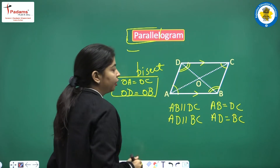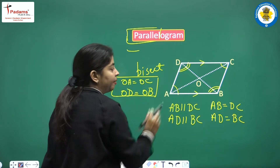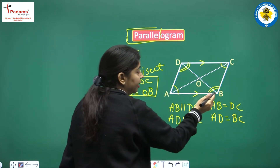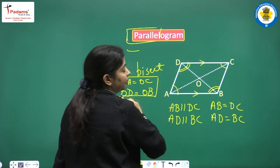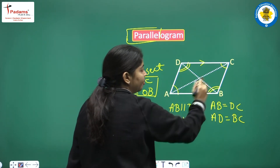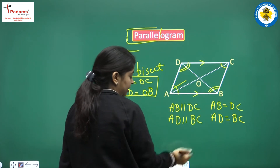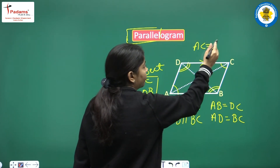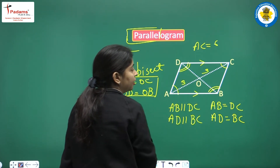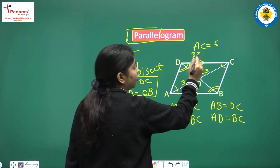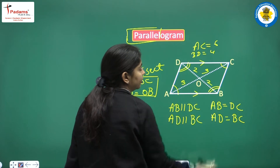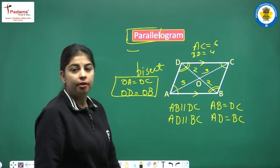In a parallelogram, the diagonals are not necessarily equal in length — AC and BD can be different lengths — but each diagonal is bisected at the intersection point O. For example, if AC is 6, then OA equals 3. If BD is 4, then OD equals OB equals 2.